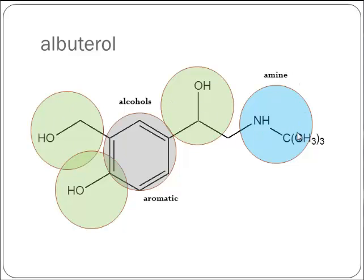This molecule has all of those functional groups, and its character — its performance and ability to act as a bronchodilator — comes from those different groupings and how they allow it to interact with various receptors in the body. One of the alcohols should actually be classified slightly differently: it's an OH connected directly to a carbon of an aromatic ring, which makes it a phenol — a subclass of alcohols with their own unique properties.